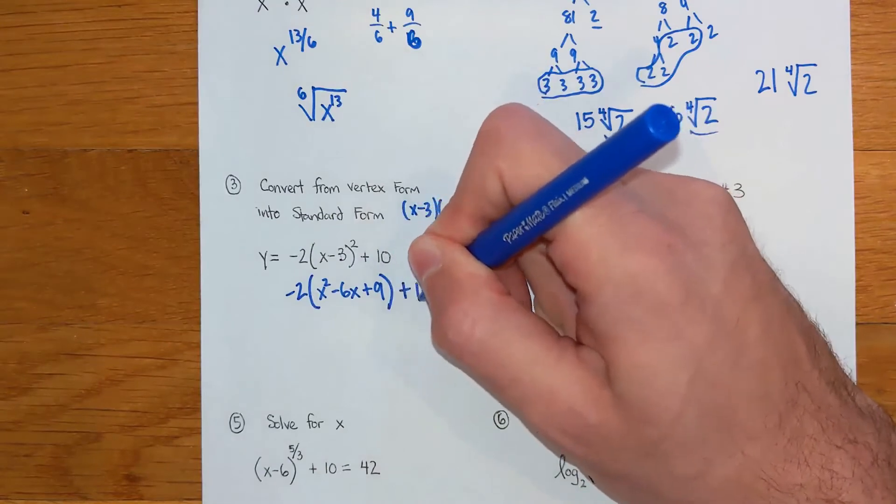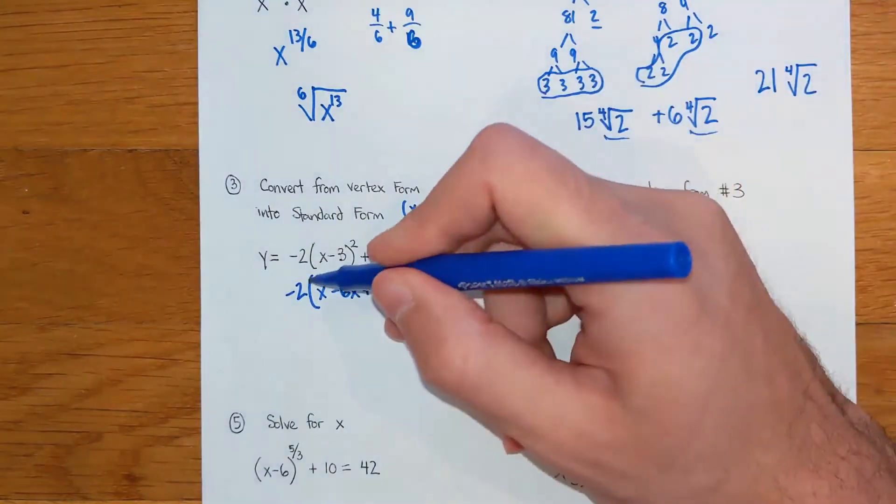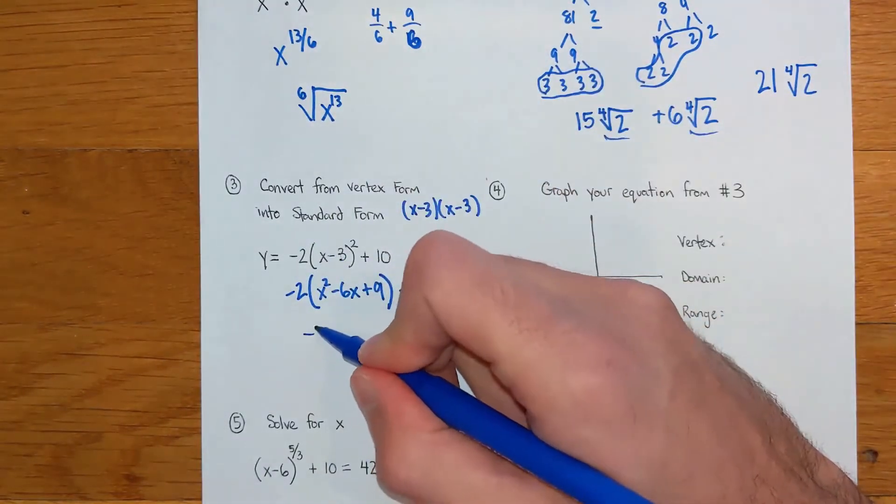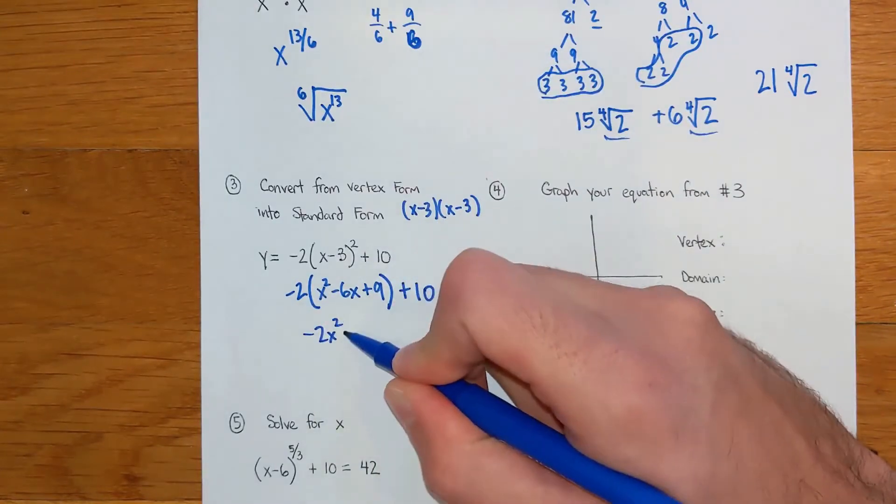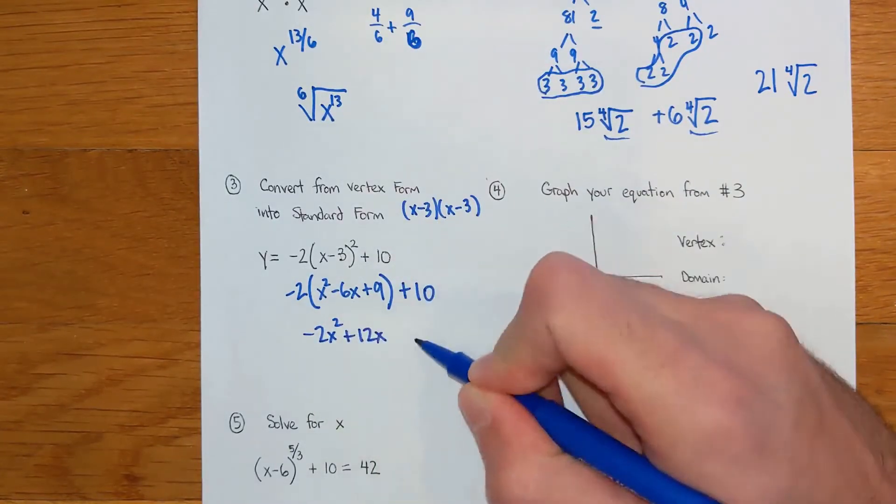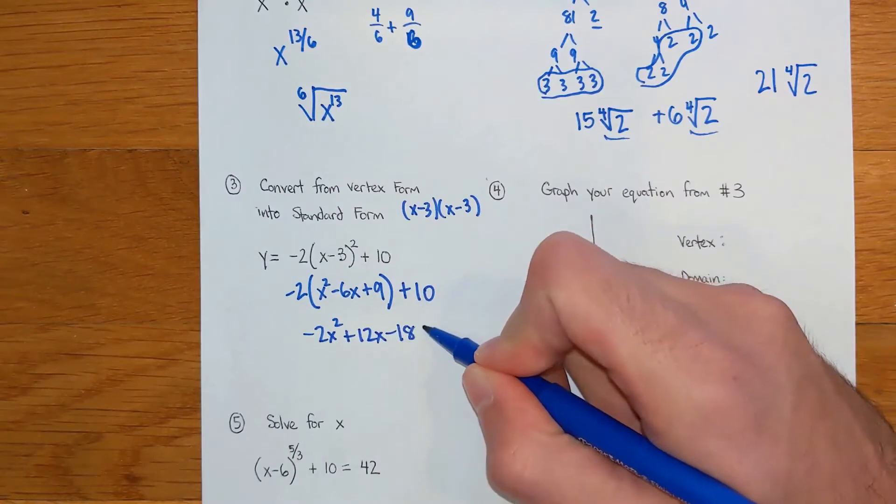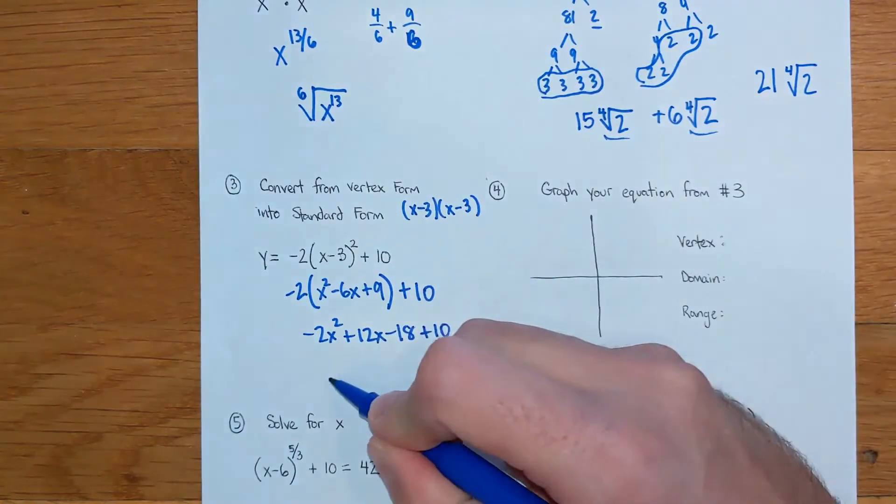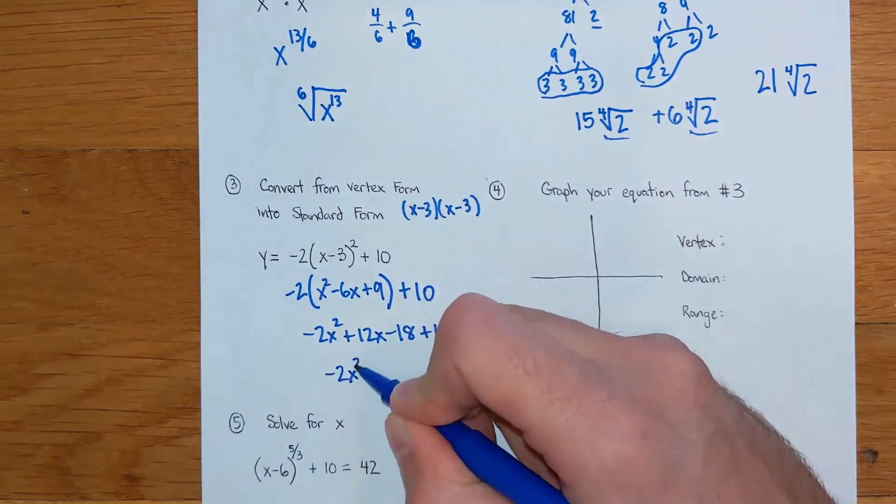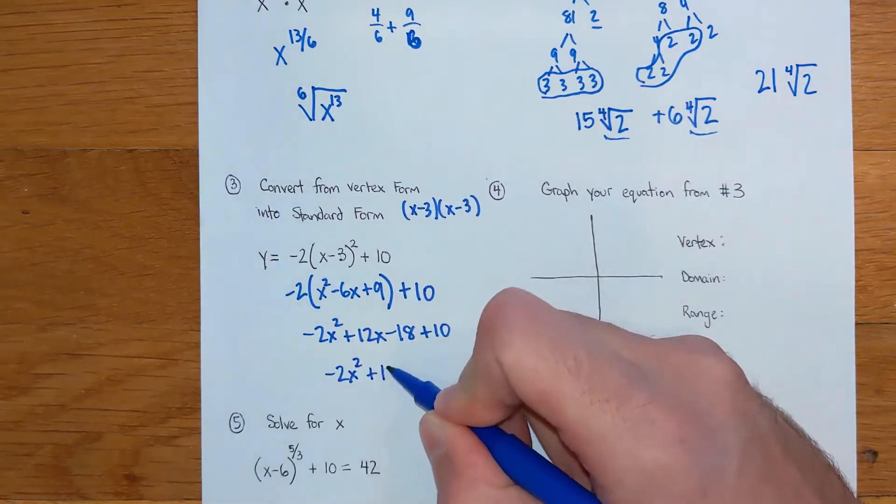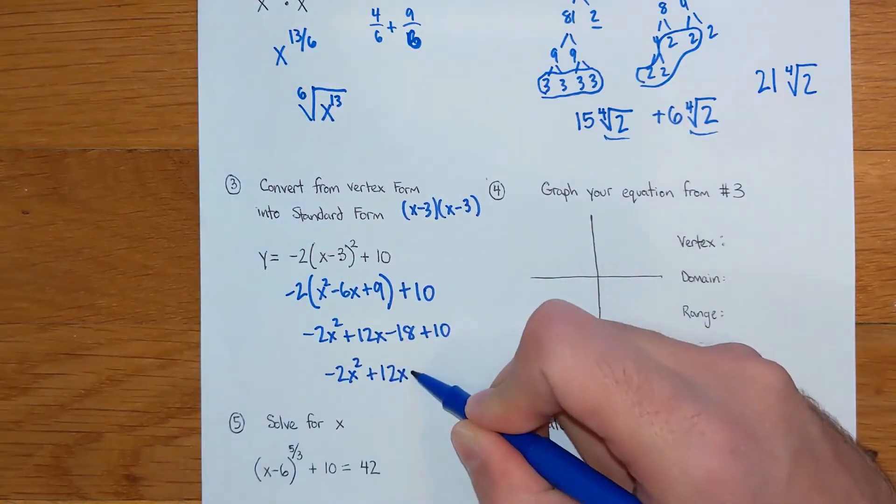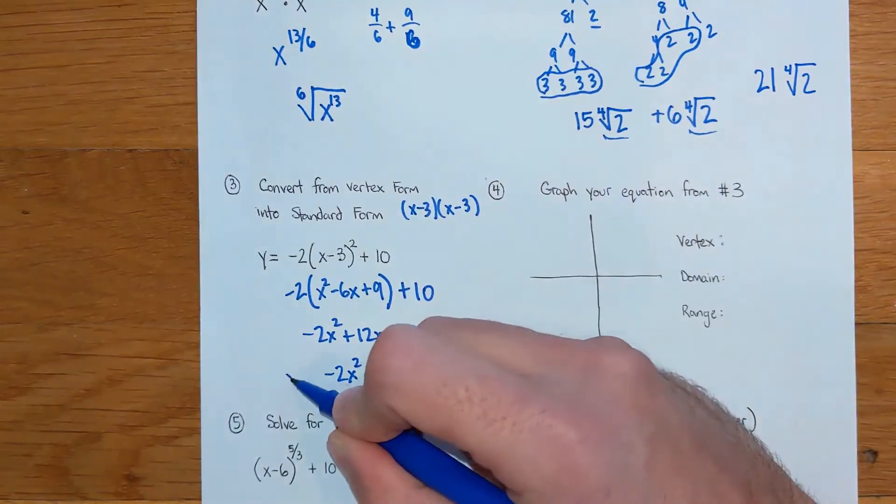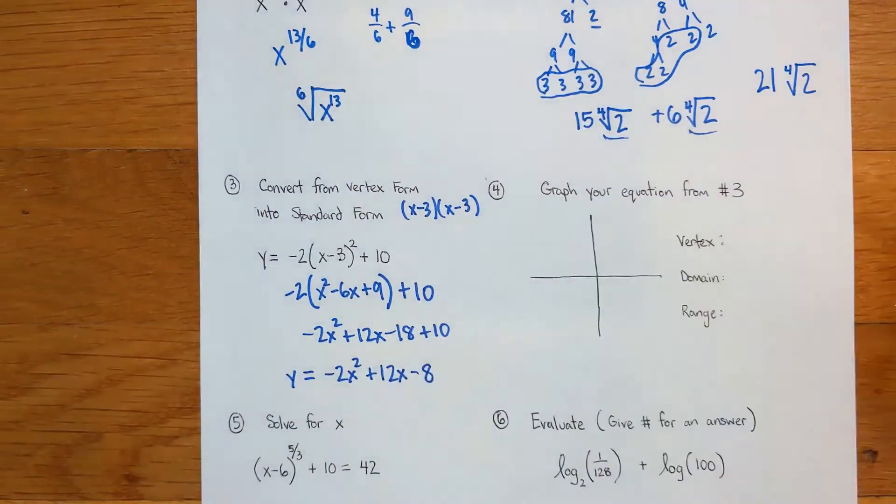That's what you get if you distribute out your parentheses, but you still have a negative two being multiplied to it and you still have a plus ten afterwards. Got to distribute our negative two. Now we got negative 2x squared, positive 12x, negative 18, and then the plus ten. Final answer for standard form is negative 2x squared plus 12x and we're going to have a negative eight. So that is my standard form equation.